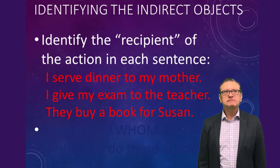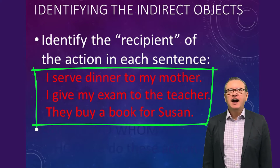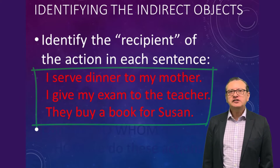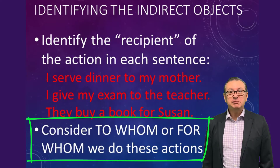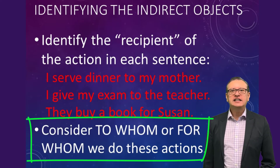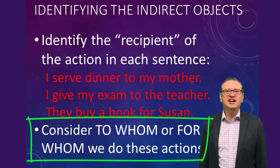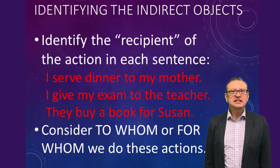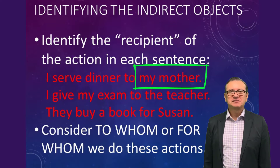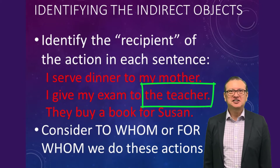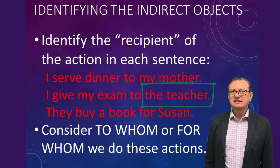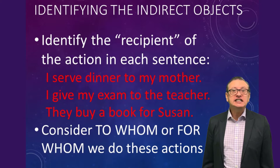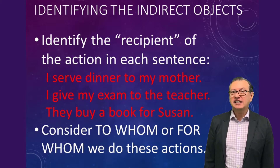Take a look at these sentences: 'I serve dinner to my mother.' 'I give my exam to the teacher.' 'They buy a book for Susan.' Think for a moment — who are the recipients of these actions? Once you find out for whom or to whom these actions are executed, you immediately identify the indirect object. My mother, my teacher, and Susan are the recipients, and therefore indirectly receive the action. That's why we call them indirect objects.